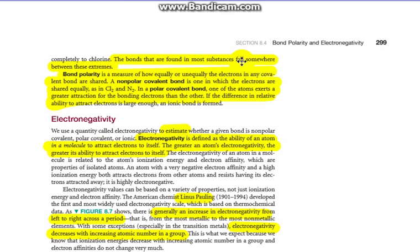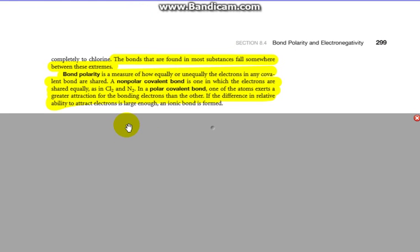But what happens with all of those that are in between? The bonds that are found in most substances fall somewhere in between these two extremes. Bond polarity is a measure of how equally or unequally the electrons in any covalent bond are shared. A non-polar covalent bond is one in which the electrons are shared equally. Both Cl2 and N2 are equal.